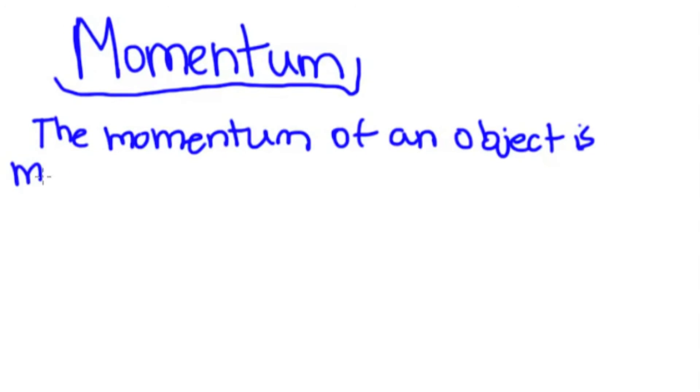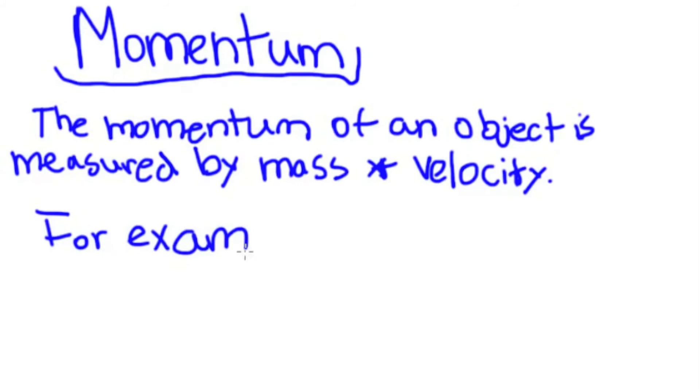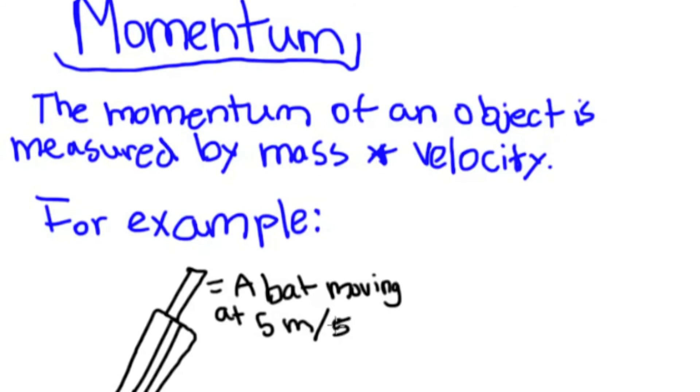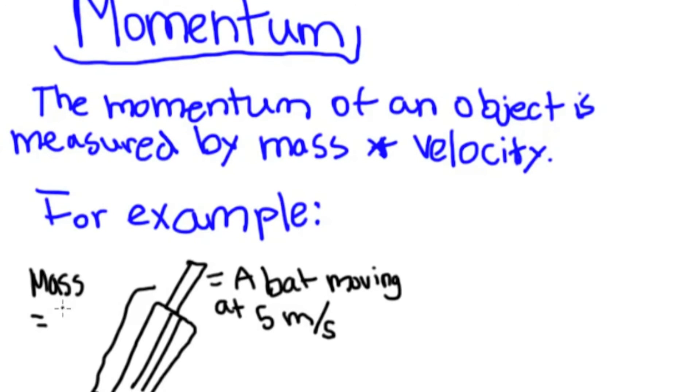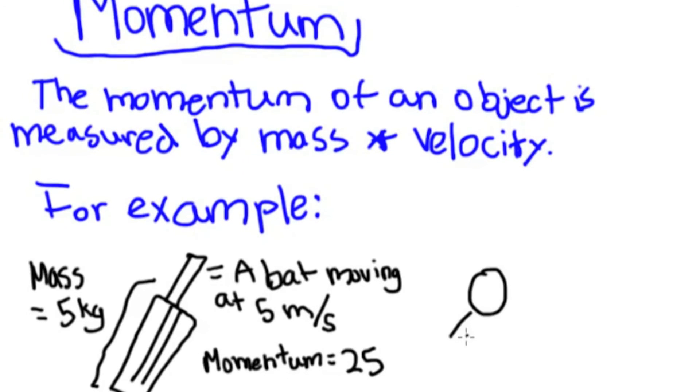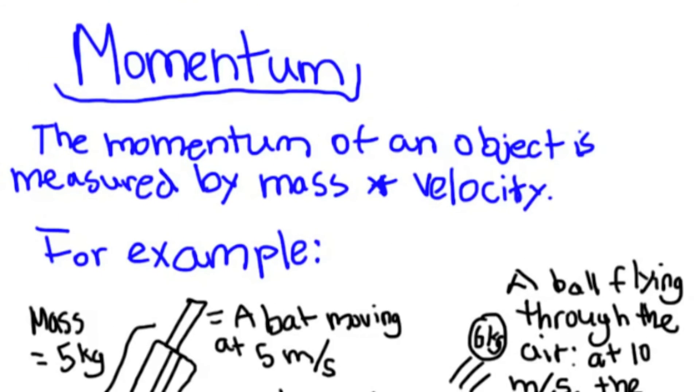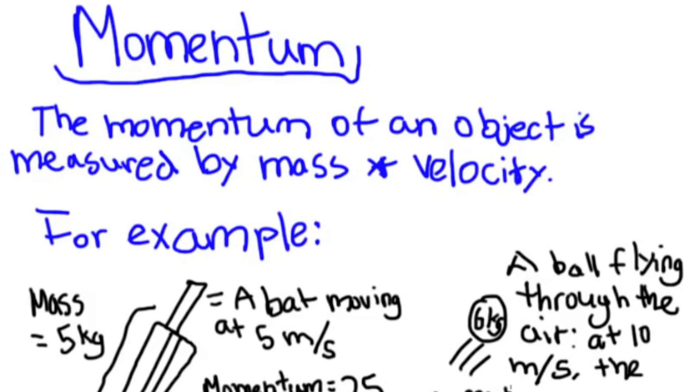The momentum of an object is calculated by multiplying the mass multiplied by the velocity. For example, let's say we had a cricket bat and it was moving at a velocity of 5 meters per second, and the mass was 5 kilograms, the momentum would be 25. If a ball was flying through the air that was 6 kilograms, moving at 10 meters per second, the momentum would be 60.